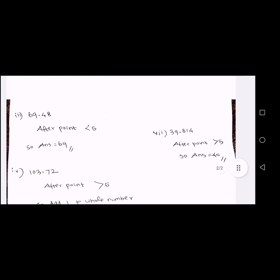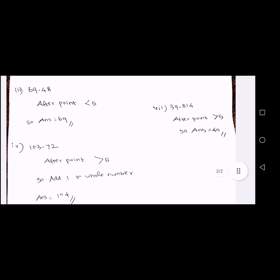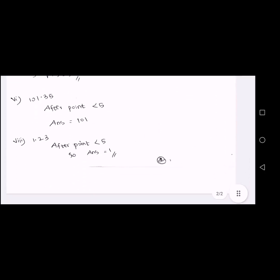Next: 39.814. After the point, the digit is 8. It is greater than 5, so we add 1 to the whole number. 39 plus 1 equals 40. Answer is 40.